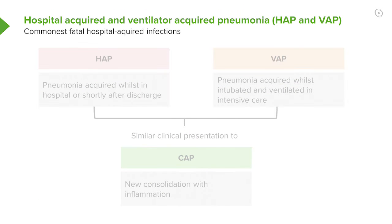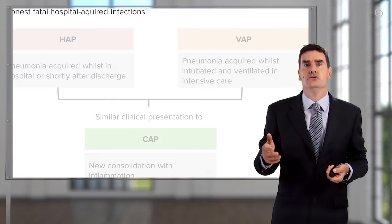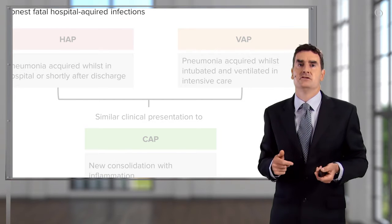In addition, there's a range of fungal organisms which you may get infected with when immunosuppressed, which would never normally infect somebody with a normal immune system. That's mainly Aspergillus and Pneumocystis jirovecii.